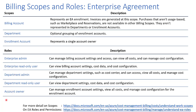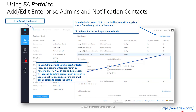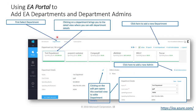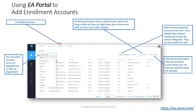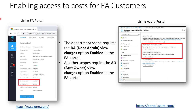To use the EA portal to assign these roles: first click on Enrollment, then click Add Administrator to add a new one, or hover over an existing admin and click the pen icon to edit. To add EA departments and department admins, click on Department, then Add Department to create a new department, or Add Administrator to add an admin to an existing department. To add enrollment accounts, click on Account, then Add Account. EA customers also need to enable access for users to view costs: the department scope requires the DA view charges option enabled, while all other scopes require the AO view charges option enabled — this can be done in either the EA portal or the Azure portal.